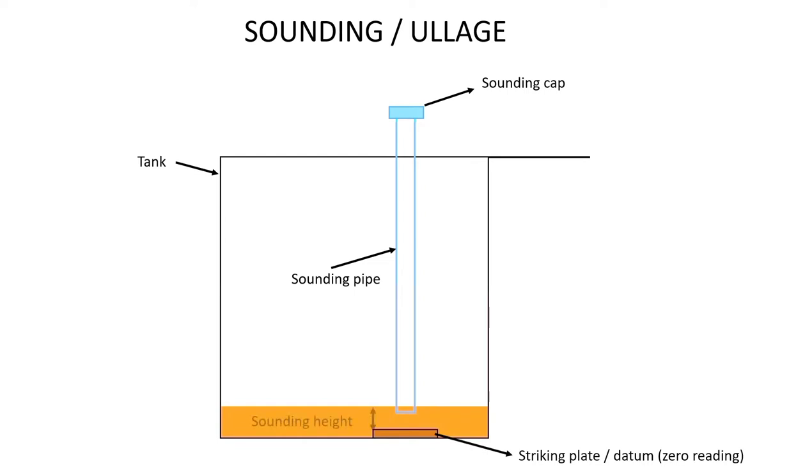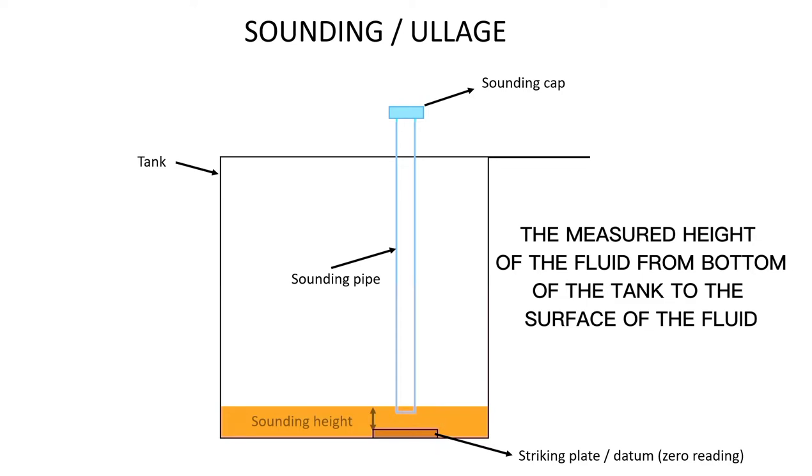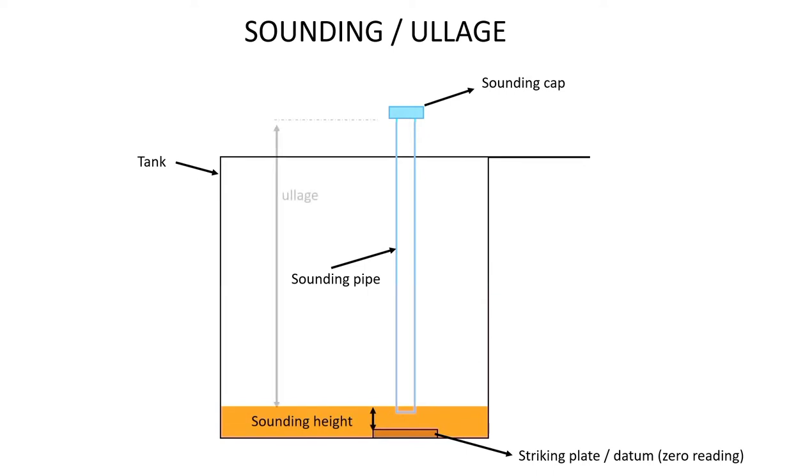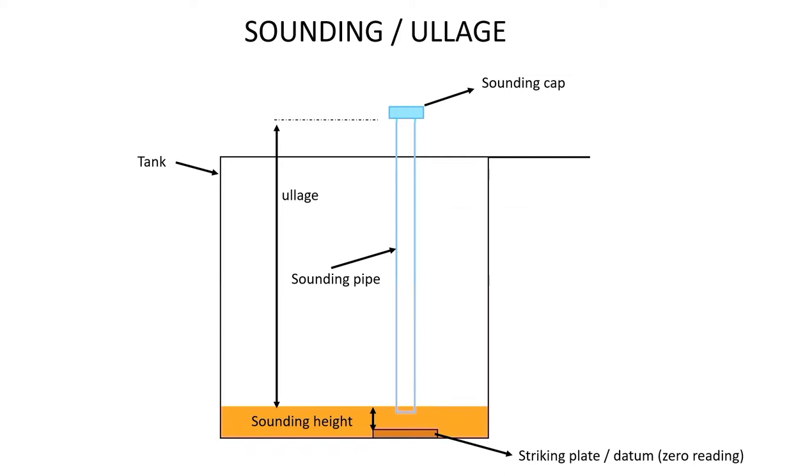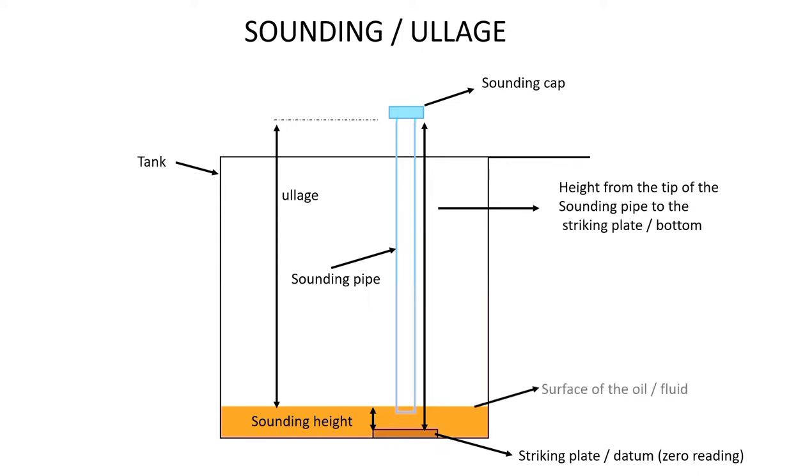Sounding height: the measured height of the fluid from bottom of the tank to the surface of the fluid. Ullage is the void space in the tank measured from the top of the tank to the surface of the liquid. Height from the tip of the sounding pipe to the striking plate bottom. Surface of the oil, a fluid.